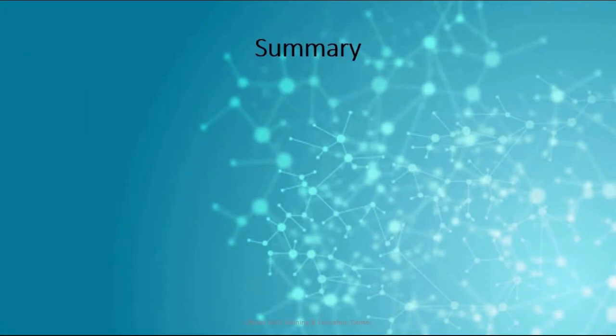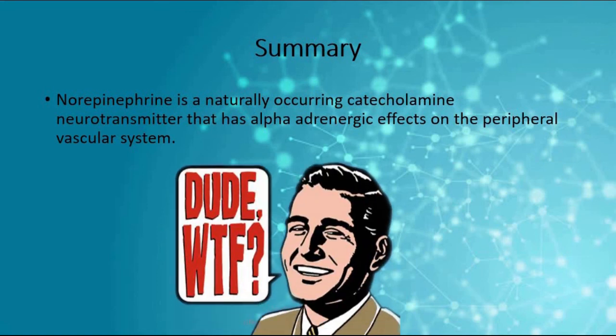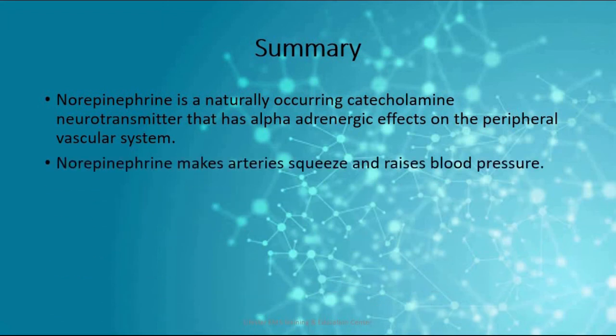Alright, does it seem like we went over a lot of information? Let's summarize the most important facts. First, norepinephrine is a naturally occurring catecholamine neurotransmitter that has alpha-adrenergic effects on the peripheral vascular system. Oh, you wanted that in English. Okay. Norepinephrine makes arteries squeeze and that raises blood pressure. And that's a handy tool for us to have in the ambulance.